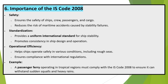Importance of the IS Code 2008. Safety: it ensures the safety of ships, crew, passengers, and cargo, and reduces the risk of maritime accidents caused by stability failures. Standardization: it provides a uniform international standard for ship stability and promotes consistency in ship design and operation. Operational efficiency: it helps ships operate safely in various conditions, including rough seas, and ensures compliance with international regulations. For example, a passenger ferry operating in tropical regions must comply with the IS Code 2008 to ensure it can withstand sudden squalls and heavy rains.